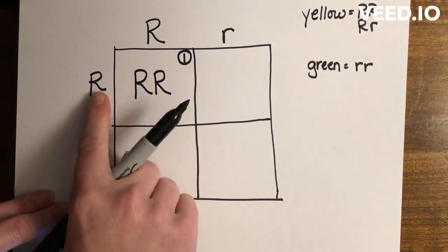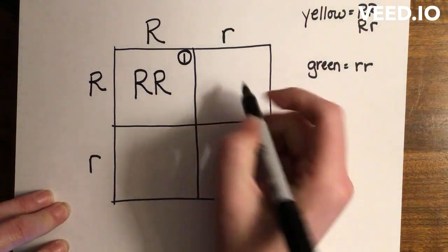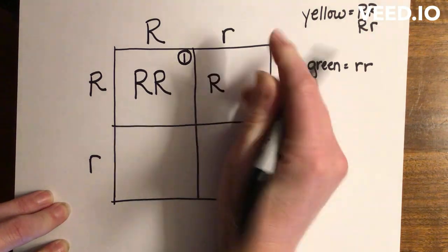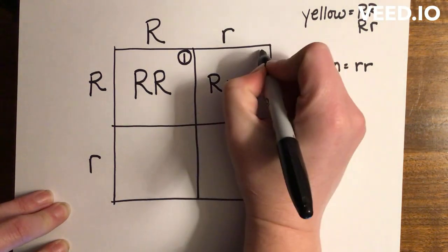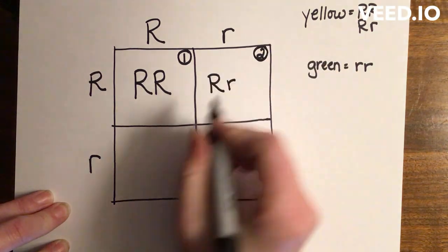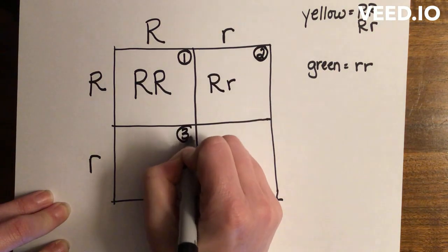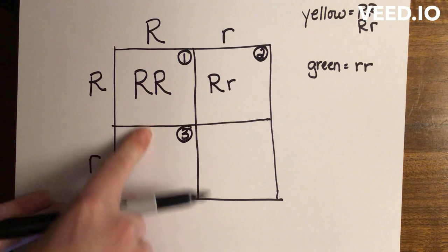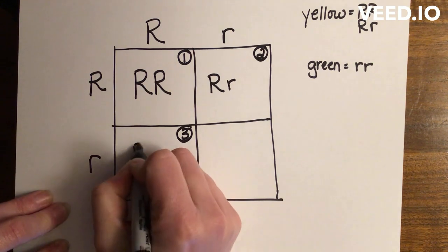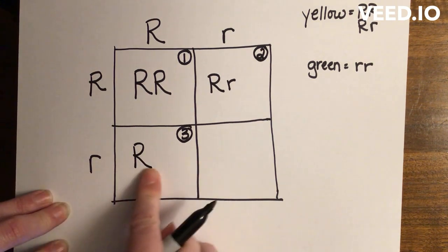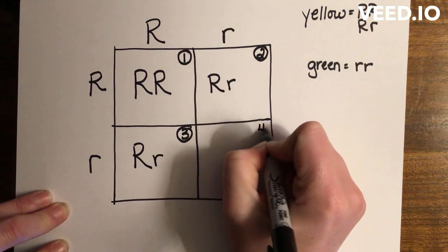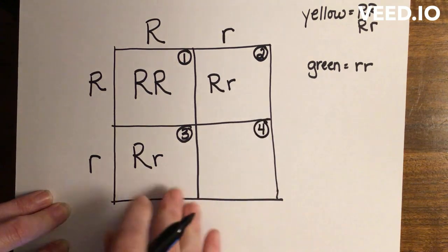In box three, I bring this uppercase letter down and this lowercase letter over. And in box four, I bring this lowercase letter down and this lowercase letter over.